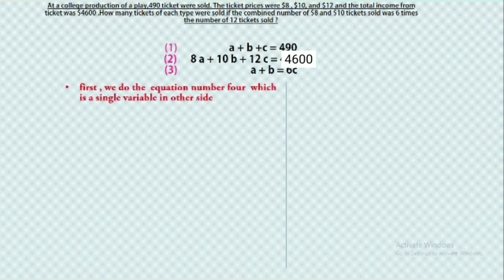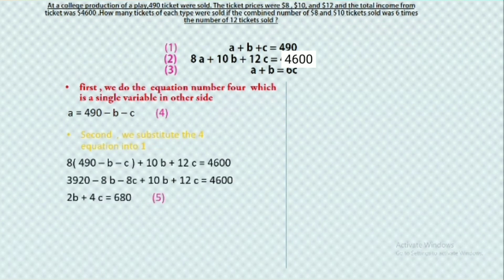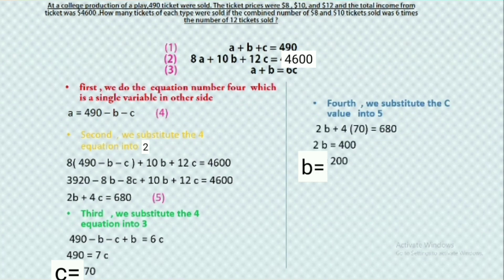First, we do equation 4, which isolates a single variable on one side. We use the first equation to form equation 4: a equals to 490 minus b minus c. Second, we substitute equation 4 into equation 1, do the calculation, and get the fifth equation: 2b plus 4c equals to 680. Third step, we substitute the fourth equation into equation 3, and we get c equals to 70. The fourth step, we substitute the c value into equation 5, do the calculation, and we get b equals to 200.